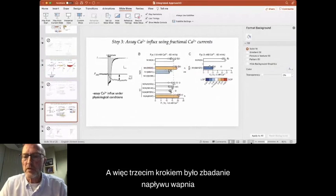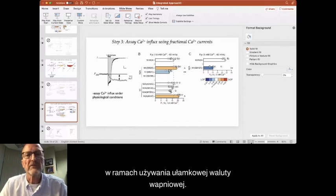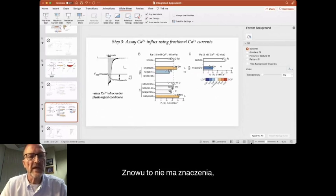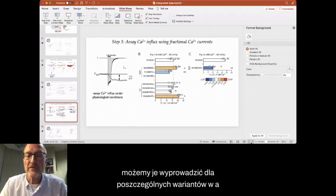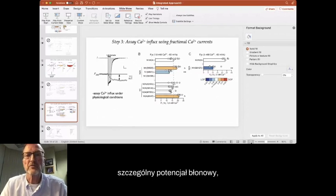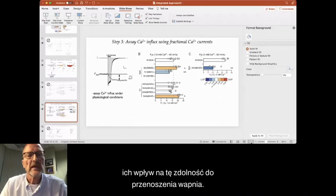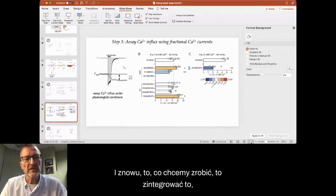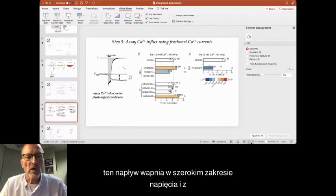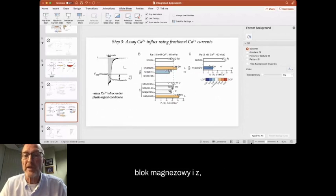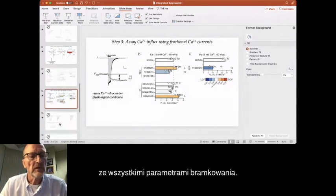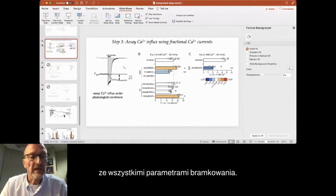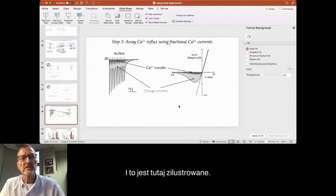And again, here's just two examples of two variants, M641I, which is a gain of function, and N614S, which is an extremely large gain of function. And so then the third step is we assay calcium influx. Using fractional calcium currents, again, we can derive them for the individual variants at a particular membrane potential, their effect on this ability to carry calcium. But again, what we want to do is to integrate this calcium influx over a wide voltage range, and with magnesium block, and with all of the gating parameters. And so that's what's illustrated here.